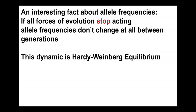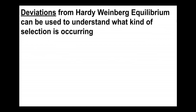That comparison can indicate first whether the population is in Hardy-Weinberg equilibrium, and second, if it's not in Hardy-Weinberg equilibrium, we can look for clues as to what type of evolutionary processes are actually happening. So deviations from Hardy-Weinberg equilibrium can be used as clues to understand evolutionary processes.